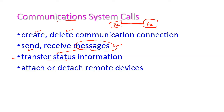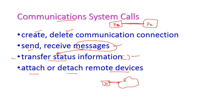The message will be transferred from one place to another place, and the transfer status information system call provides that status. We also have attach or detach remote devices — a device can be connected to the internet, and for that the communication system calls are used. For example, one device and another device located somewhere else can be connected by attaching that remote device.